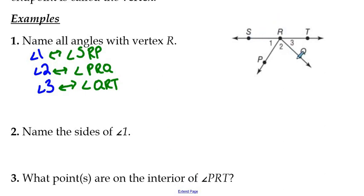There's a couple others here. We have angle SRQ. That's perfectly fine. That's an angle that has a vertex at R and sides RS and RQ. We can also have angle PRT. And we could also have this angle right here, angle SRT. So those are all the angles that have a vertex of R there.